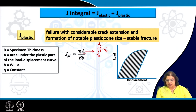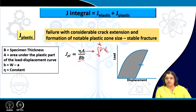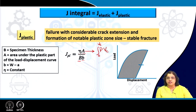The J_plastic term is inversely related to thickness: the thicker the specimen, the lower the plastic component of J; the thinner the specimen, the higher J_plastic. This is consistent with what we've seen earlier — plane stress fracture toughness increases as the specimen gets thinner, and decreases as it gets thicker, reducing until it reaches the plane strain condition when the specimen is sufficiently thick.